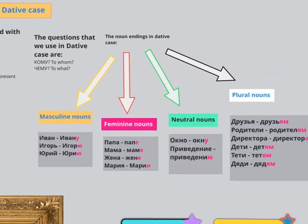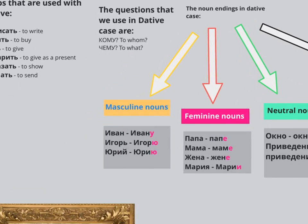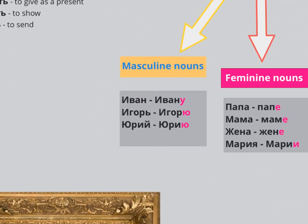Let's move on to the actual endings, starting with the masculine nouns. When you take a name like Иван, you can see it ends in a consonant — Н. All you need to do is add У. In the two situations below, we've got either a soft sign or Й at the end — these are the tricky ones. Get rid of the soft sign: so instead of Игорь, you say Игорью. For Юрий, get rid of the И краткое and say Юрию. So for masculine nouns, all you get is У and Ю.